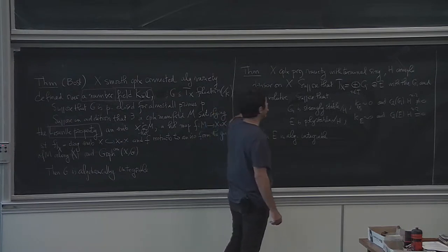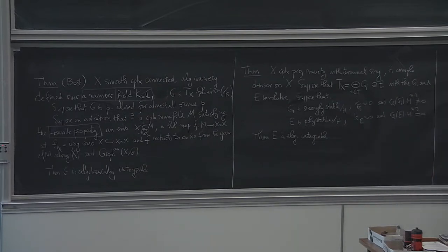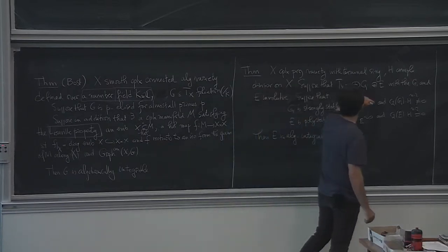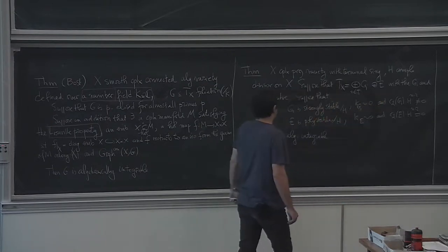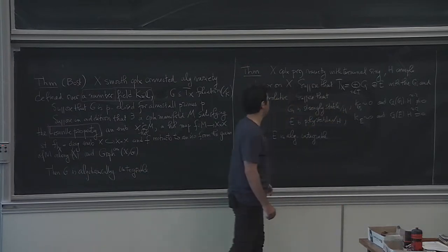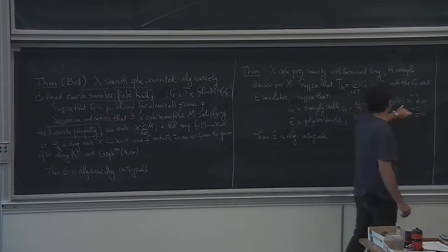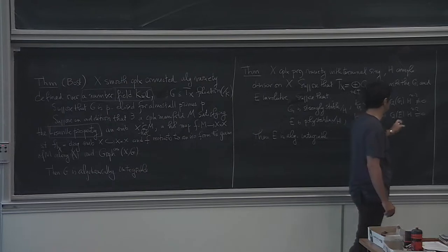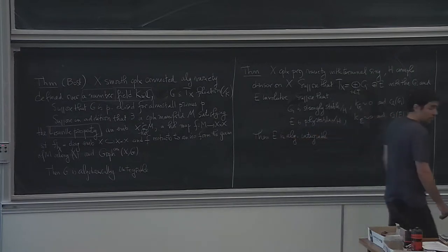Yesterday we started the proof of this statement. You start with a complex projective variety with mild singularities. You fix an ample class, and you suppose that you have a decomposition of the tangent sheaf into two involutive subsheaves. The G_i are strongly stable — zero canonical class, second Chern class non-zero — and E itself is just polystable, zero canonical class but with c₂ equal to zero. This is the flat part in the decomposition. The conclusion is that E has to be algebraically integrable as well.